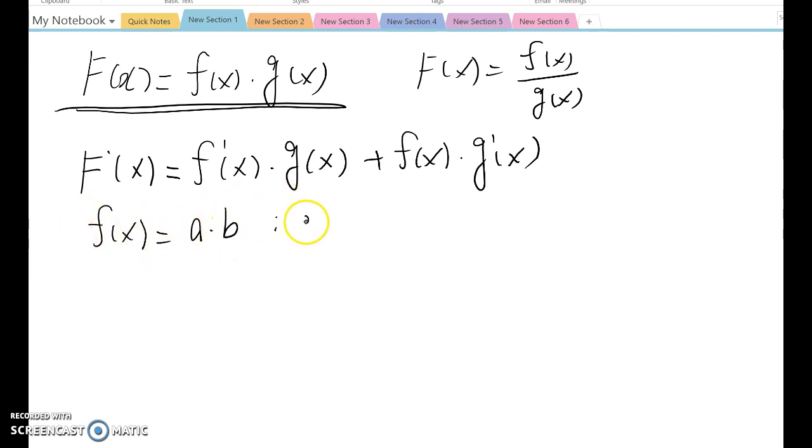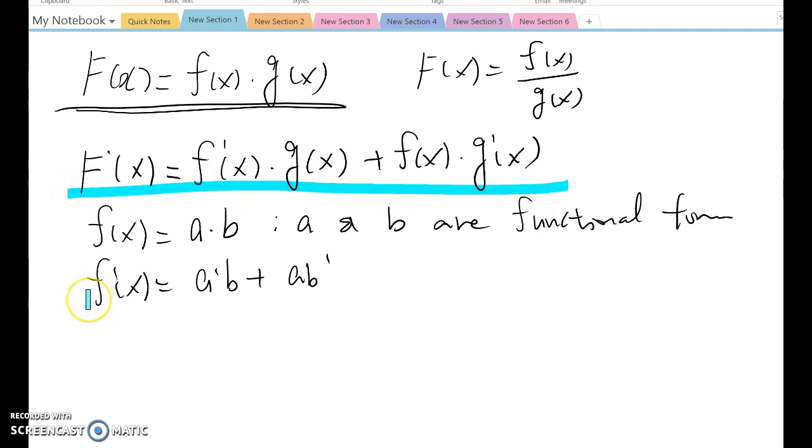If f(x) equals a times b, and a and b are functions or expressions in functional form, then f prime x equals a prime b plus a b prime. I know that this notation is exactly the same as the previous one, but this one looks a little bit simpler and I can give you more steps.